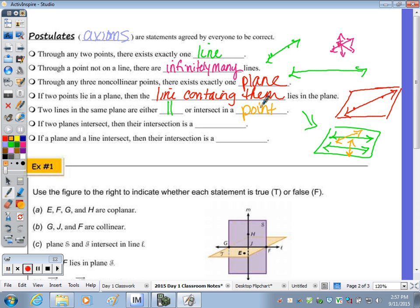The next one, if two planes intersect, then their intersection is, from the previous page, a line. If a plane and a line intersect, then their intersection is a point. So I'm going to give you about three to four minutes to quickly look at those questions, and then we'll go through the answers, and then we're going to skip to the back. We're going to skip example number two.